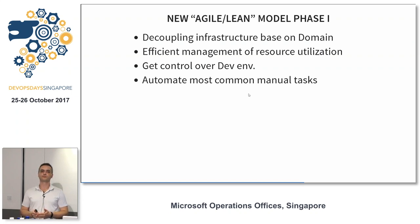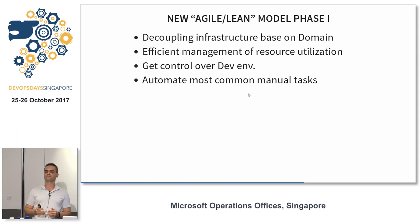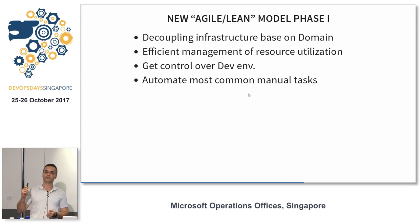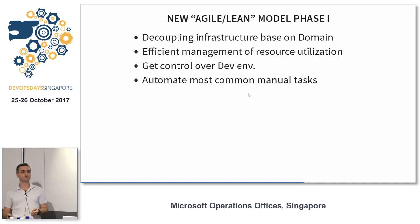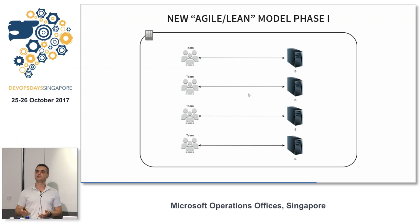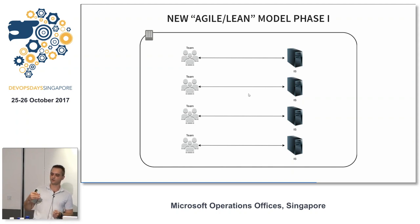We split work into phases. Phase one: we tried to stabilize the development environment so teams wouldn't conflict with each other. We decoupled infrastructure based on domain — wealth, security, risk — very similar classification packages. This helped us efficiently manage resource utilization and gave us control over the development environment. We fought with our Unix team to get root access to the boxes — we needed full control. It took a while, but we got it. We automated most of the tasks that were done manually — each team had their own VMs they could deploy to. We also started training teams to take ownership of what they ran in development and to support and fix their own problems.